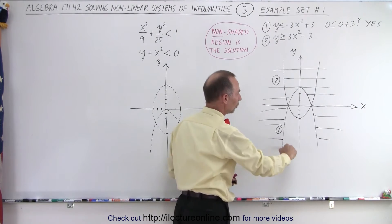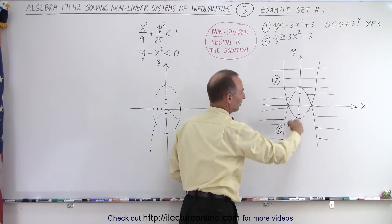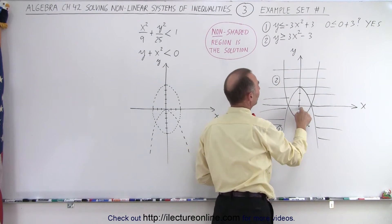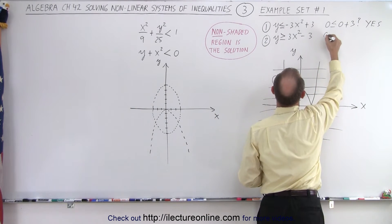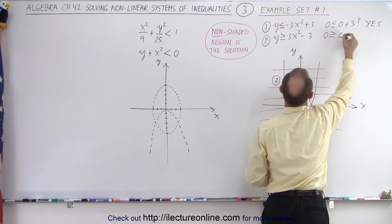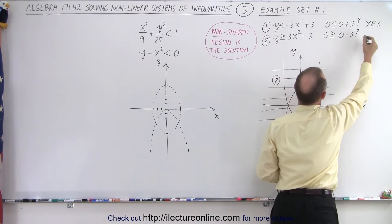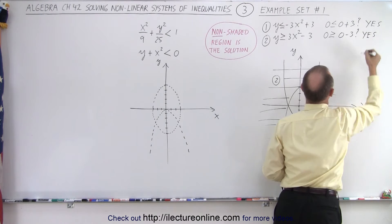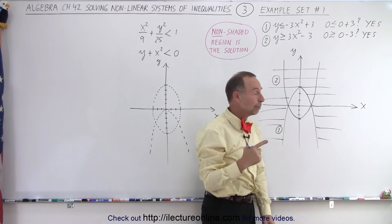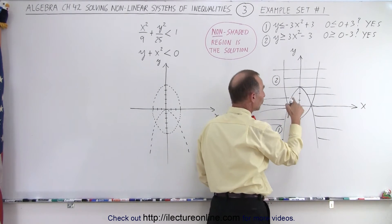Okay, so all that possible solution is right here. Now for the second one, again we'll plug in origin (0,0). So is 0 ≥ 0 - 3, question mark? So is zero greater than negative three? The answer is yes.